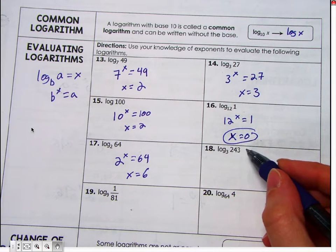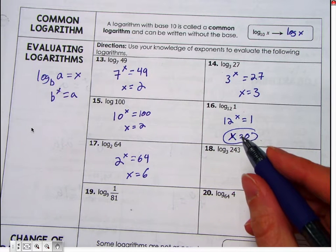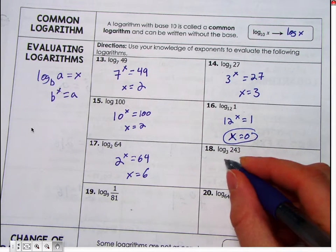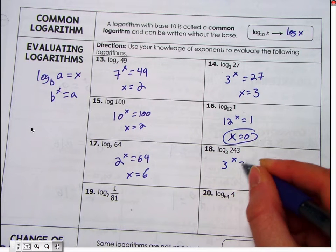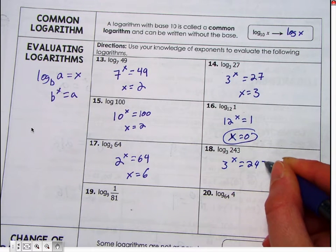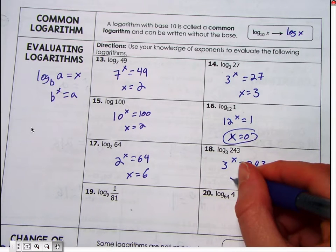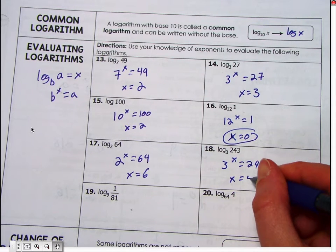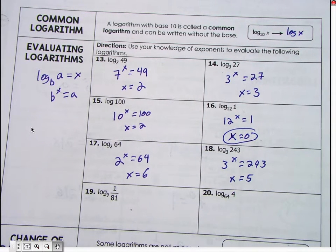All right. Log three. Log base three of 243 becomes three to the x equals 243. And x equals five. Okay, two more, guys.